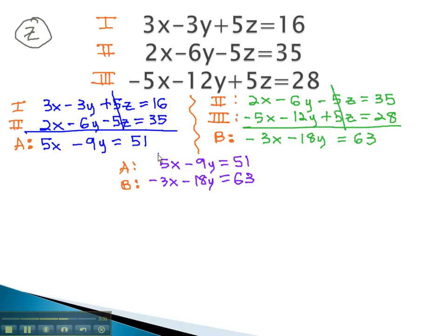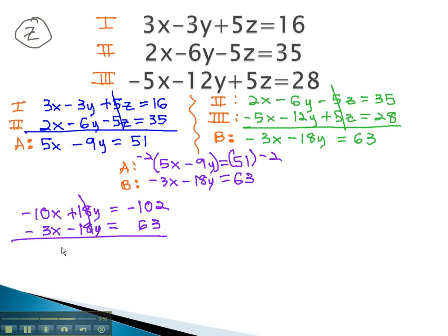Notice we can get opposites in front of the y's by multiplying the first equation by negative 2. When we do, we have negative 10x plus 18y equals negative 102, and negative 3x minus 18y equals 63. Adding these equations together, we get negative 13x equals negative 39. Dividing by negative 13, we find x is equal to 3.